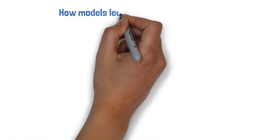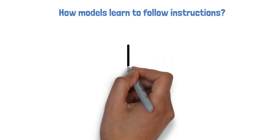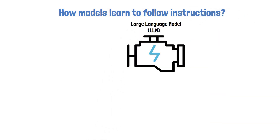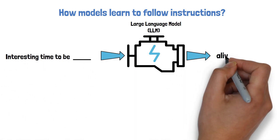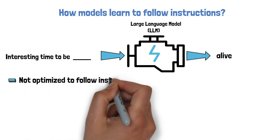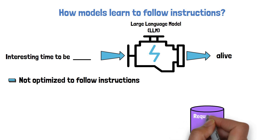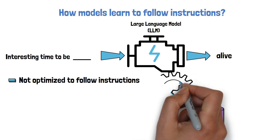Before diving into WizardLM, we need to shortly describe how models learn to follow instructions. Large language models, or LLMs in short, are trained to predict the next word given a sequence of words, and not optimized to follow instructions. In order to fine-tune a pre-trained LLM to follow instructions well, we create another dataset of requests and responses and fine-tune the LLM on it.